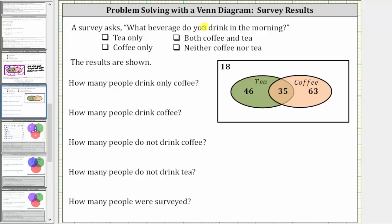A survey asks what beverage do you drink in the morning? The choices are tea only, coffee only, both coffee and tea, or neither coffee nor tea. The results are shown to the right in the provided Venn diagram.